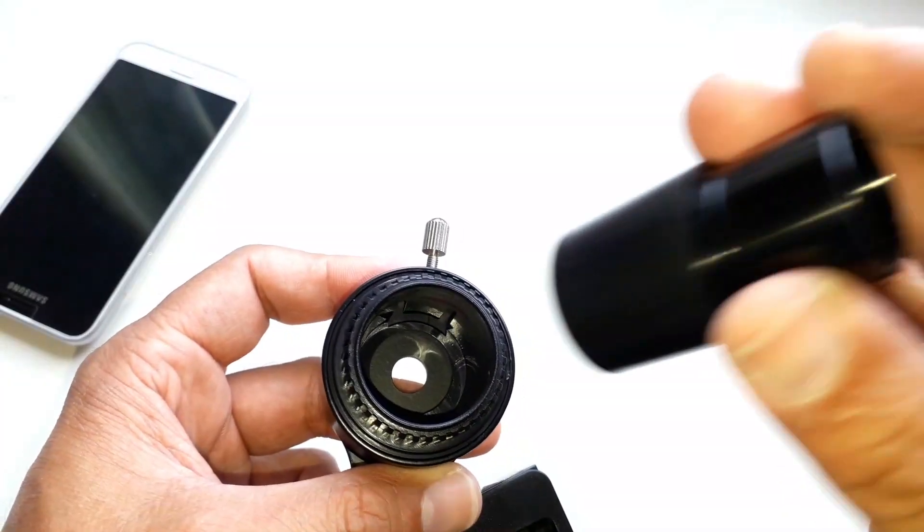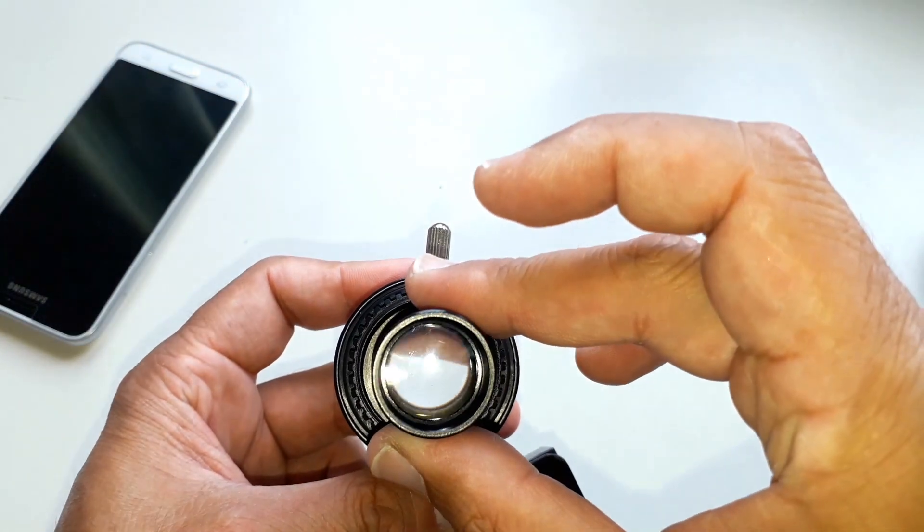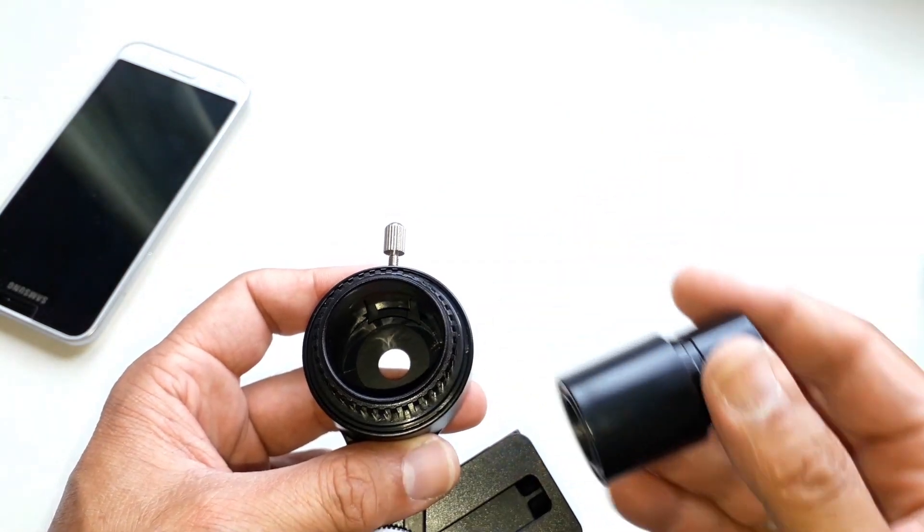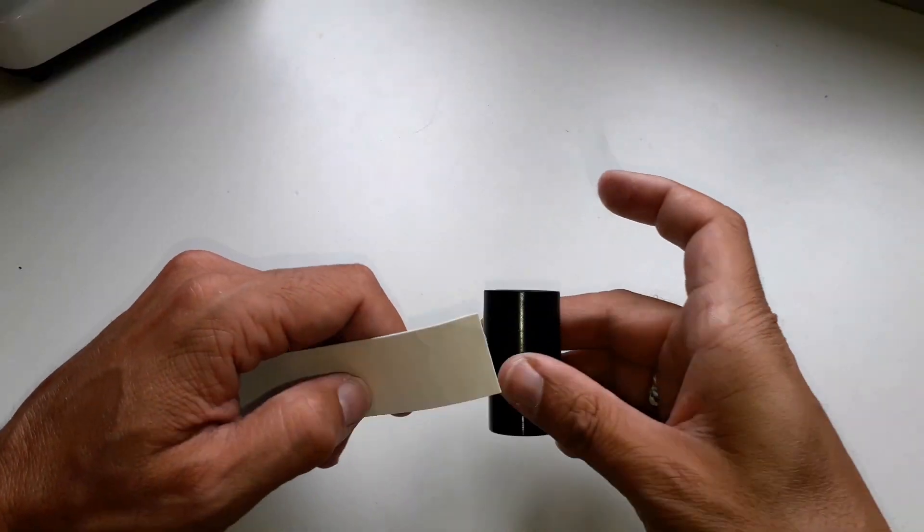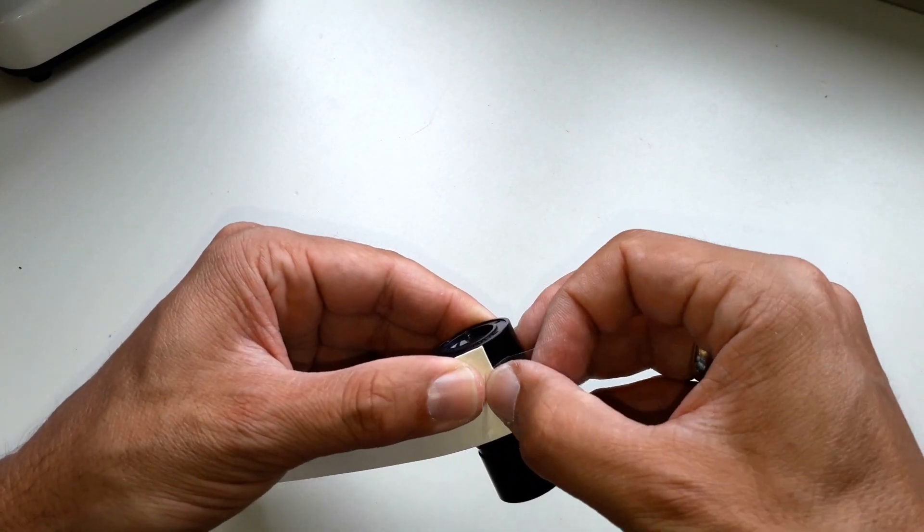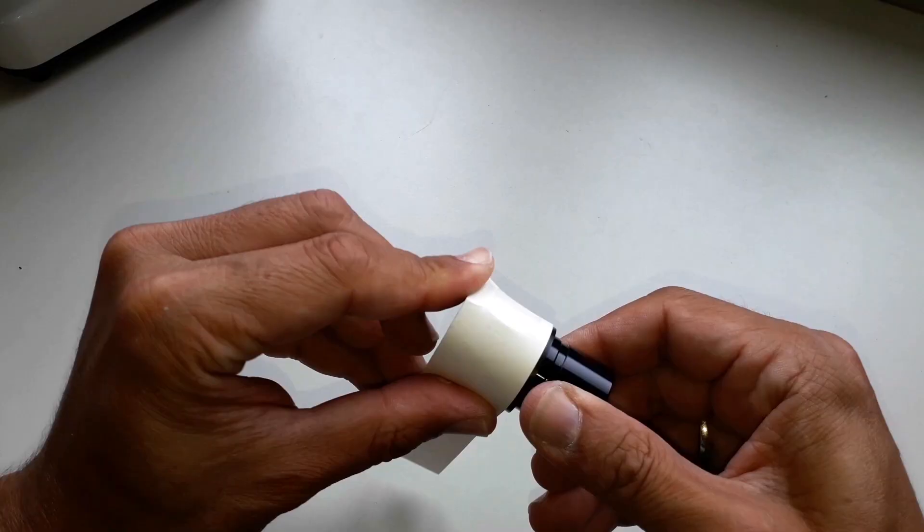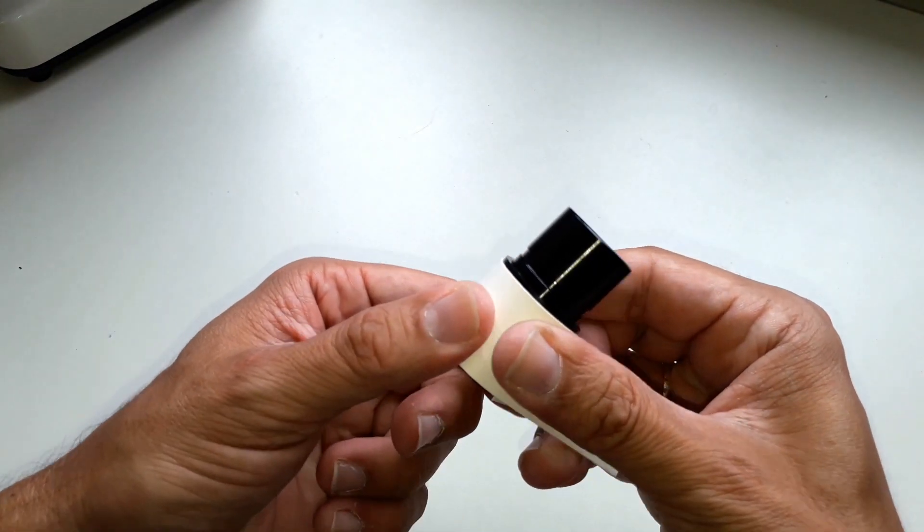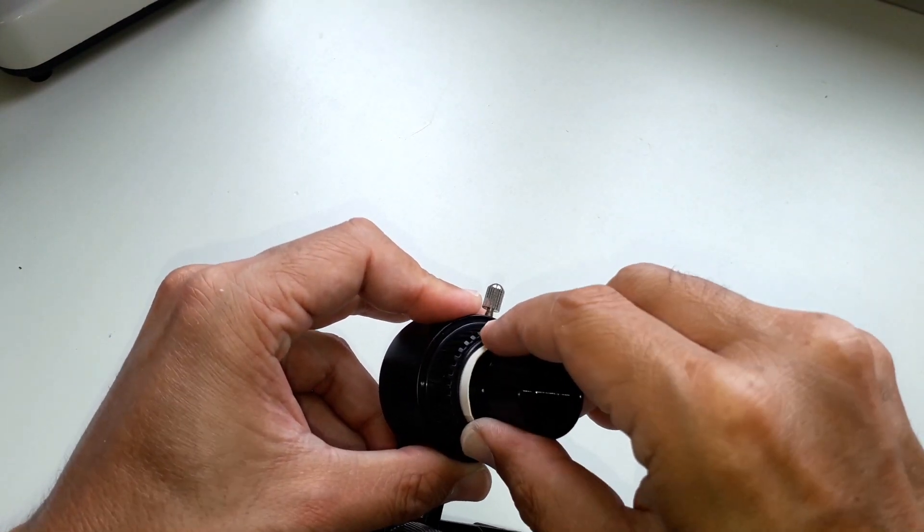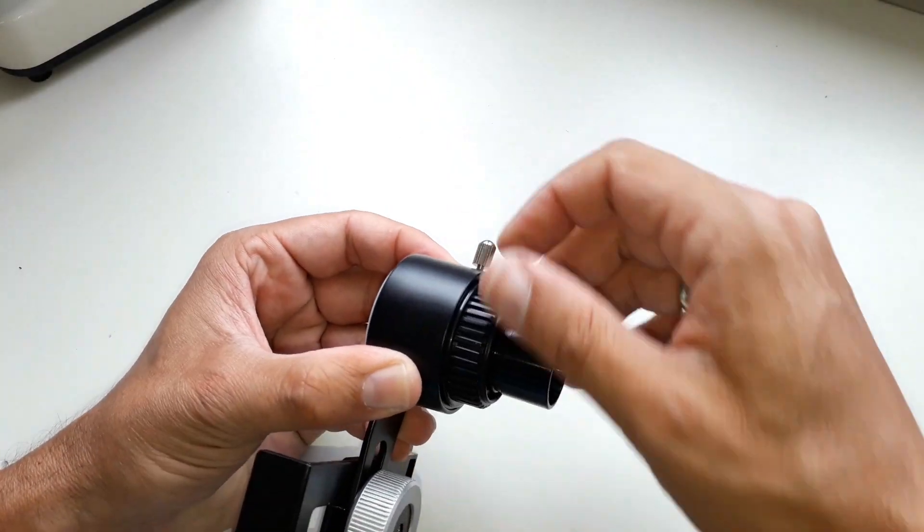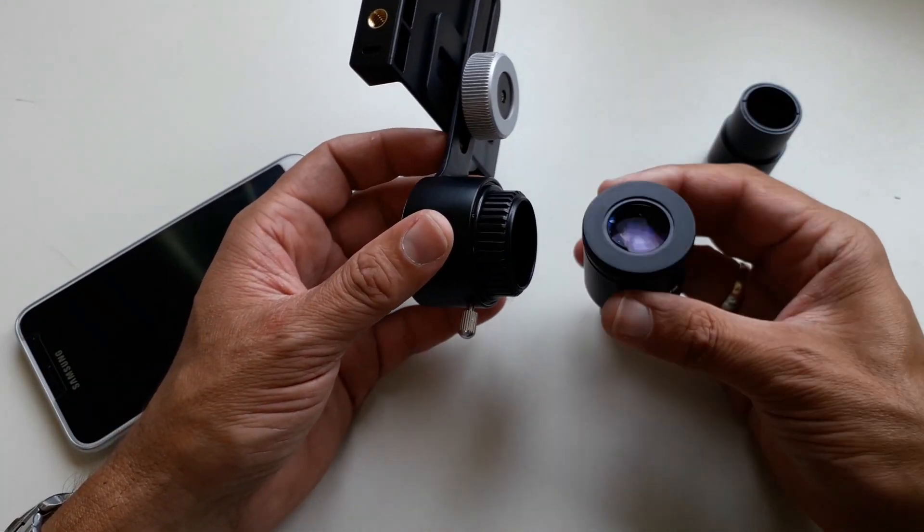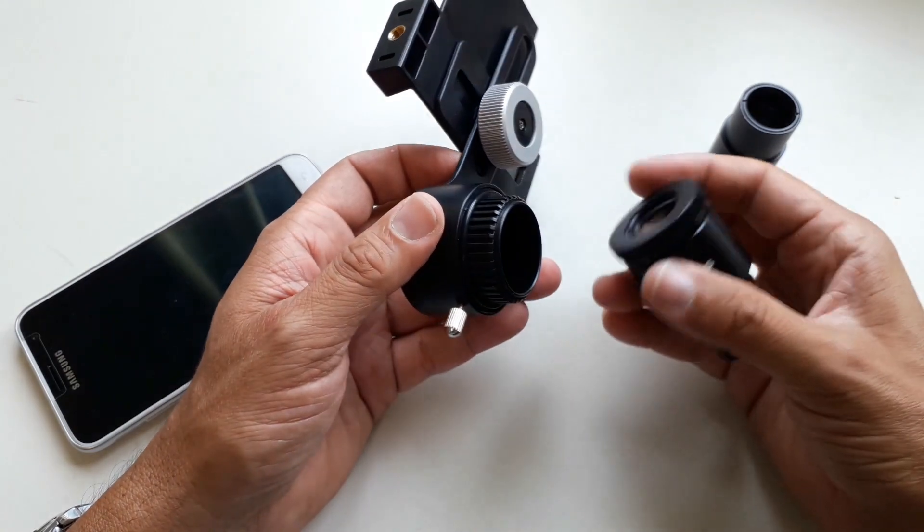Now this is the smaller eyepiece and there is some play there that we want to remove. We do that by wrapping a little bit of cardboard around. For this reason I recommend that you actually buy the adapter for the 28 millimeter eyepieces because then you can also make smaller eyepieces fit by simply wrapping cardboard around it and it also works as you can see.